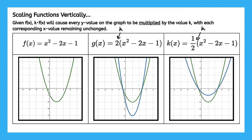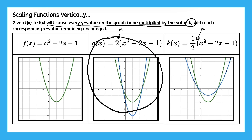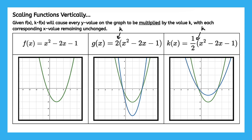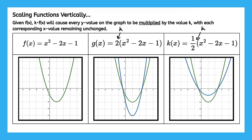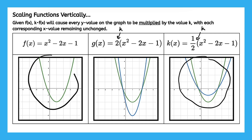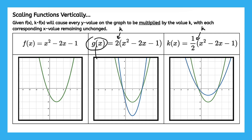That's progress because now we know what k is in the function g of x and in the function k of x. Now what is the significance of k? It says that k times f of x will cause every y value on the graph to be multiplied by the value k. Let me be really clear that the green curve on this graph is still just f of x — I put it there again so we can see the change more easily. So when I say g of x, it's referring to the blue curve, and when I say k of x, it's also referring to the blue curve.